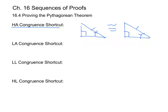So if you have two right triangles and you have a leg and a corresponding acute angle that are congruent, then you can say that the two triangles are going to be congruent.